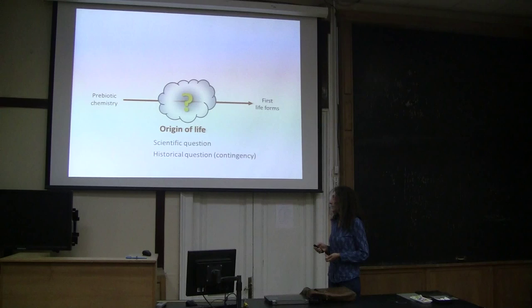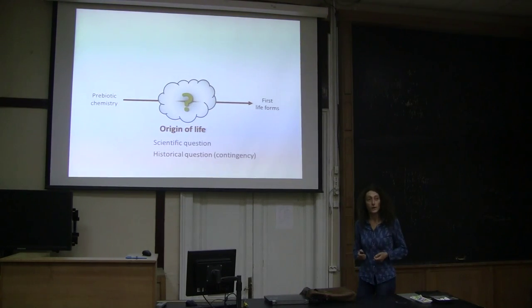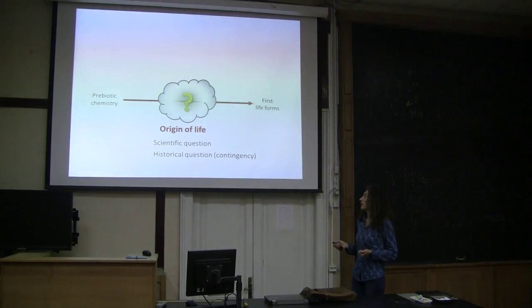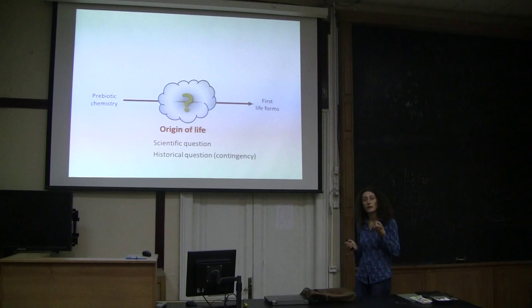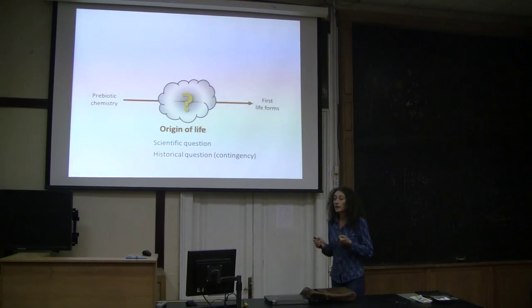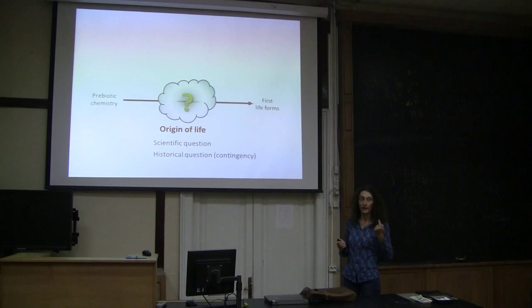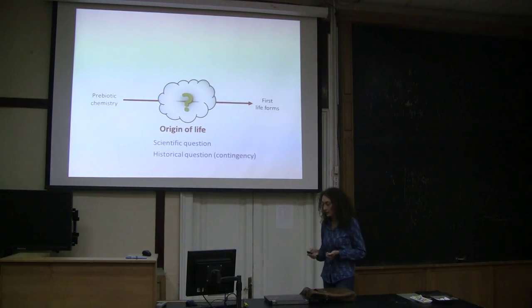At some point that we need to define, we consider life originating. It is a scientific question but also a historical question, and that is part of the problem because there is contingency and chance. Even if we can reconstruct a possible pathway to life or make life in a test tube, we will never be sure that this historically happened like that unless we have a time machine.